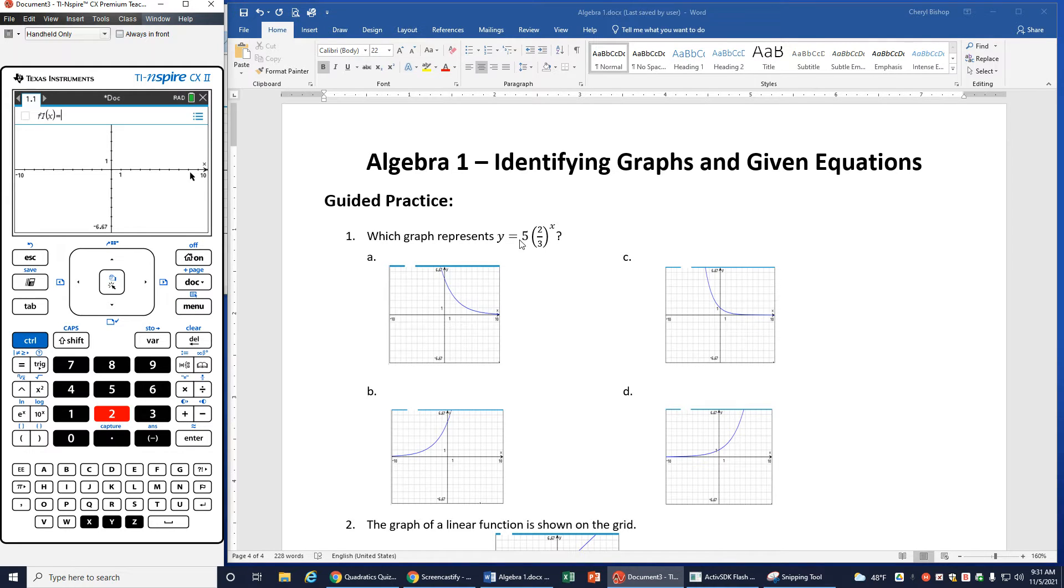And I can see it has f of x equals. We're doing y equals, but that's okay. I'm going to do 5 times 2 thirds, which is 2 divided by 3. And then to get that x in the exponent position, next to where we would normally hit the square button to put a square up there, to the left of that we have this little up arrow. We're going to click that, and that's where we're going to put the x. So I can see I have 5 times 2 thirds to the x power.